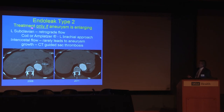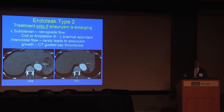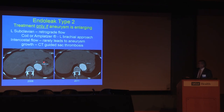Here's a Type 2 endoleak — you only treat these if the aneurysm is enlarging. If you get retrograde flow from the left subclavian, that's the easiest to treat: go up the brachial and place an Amplatzer plug or coil it. If it's due to intercostal flow, it rarely leads to aneurysm growth, but if treatment is needed, we have our interventional radiologists do CT-guided induced sac thrombosis, which is probably the safest approach. Here's a patient from 2008 with a Type 2 endoleak — three years later the aneurysm is actually smaller.